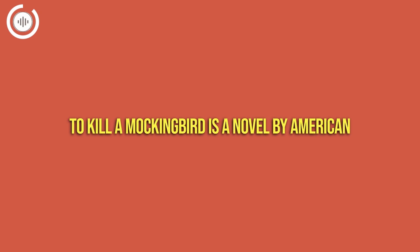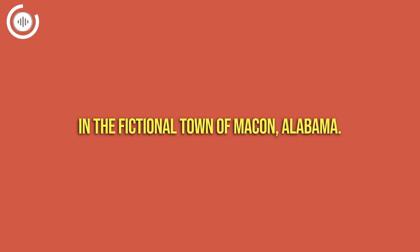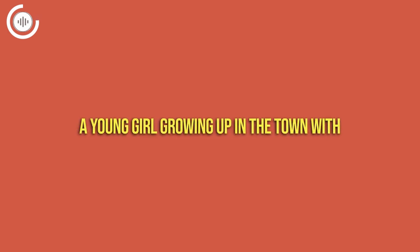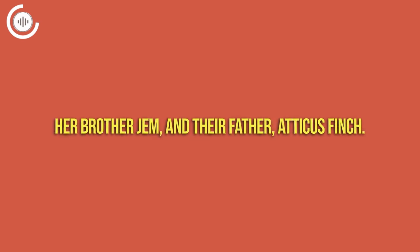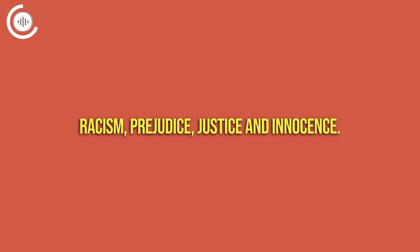To Kill a Mockingbird is a novel by American author Harper Lee that takes place in the 1930s in the fictional town of Macon, Alabama. The story is told through the eyes of Scout Finch, a young girl growing up in the town with her brother Jem and their father, Atticus Finch. The novel explores themes of racism, prejudice, justice, and innocence.